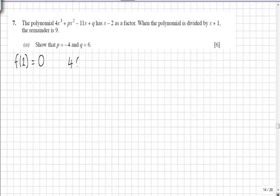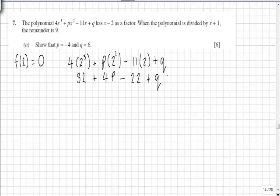Doing this, we get 4 times 2³ plus p times 2² minus 11 times 2 plus q. Simplifying, 2³ is 8, so that gives us 32 plus 4p minus 22 plus q equals 0. Gathering like terms, we have 10 plus 4p plus q equals 0.